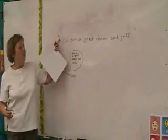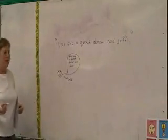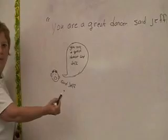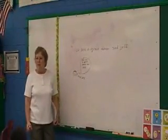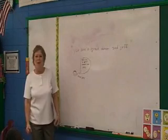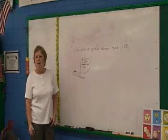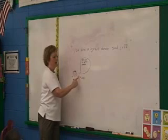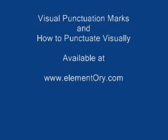If the quotation marks fell at the beginning and the ending, okay, this is what your picture would look like. So everybody looking up? You are a great dancer, said Jeff. Did Jeff really say, 'You are a great dancer, said Jeff, said Jeff'? Or did he just say, 'You are a great dancer'? All he said was 'You are a great dancer' — 'said Jeff' is outside of the speech bubble.